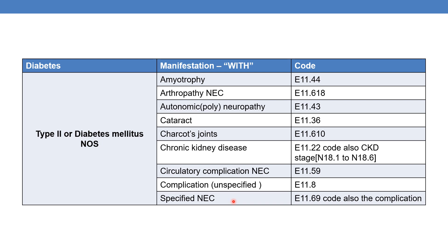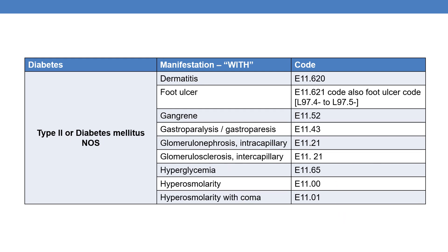For diabetes mellitus with specified complication, the code is E11.69 — and you need to also code the complication. For unspecified complication of diabetes mellitus, the code is E11.8. The next is diabetes mellitus with dermatitis; the code is E11.620.